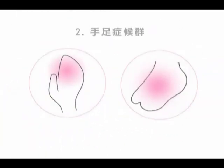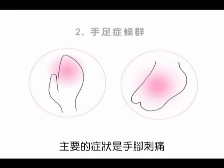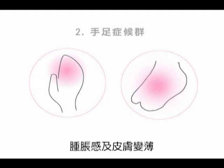第二：手足症候群。通常在給藥後1至2週出現，主要的症狀是手腳刺痛、腫脹感及皮膚變薄，嚴重者會產生水泡、潰瘍等症狀。